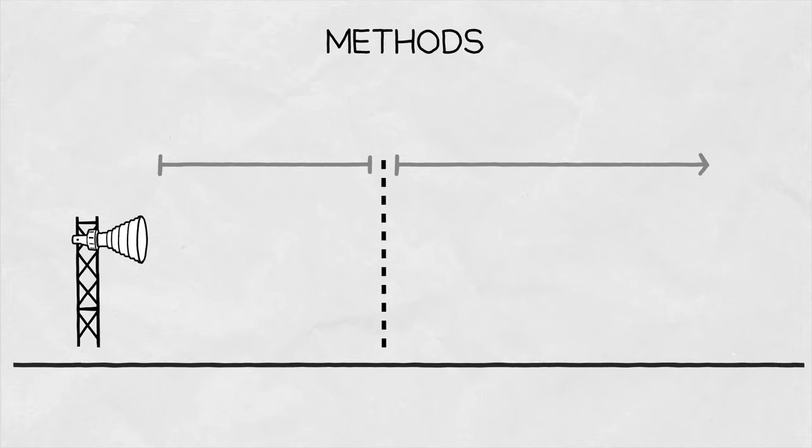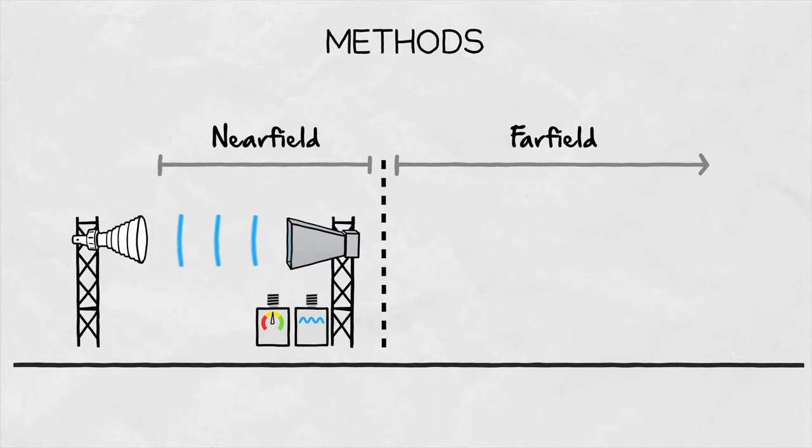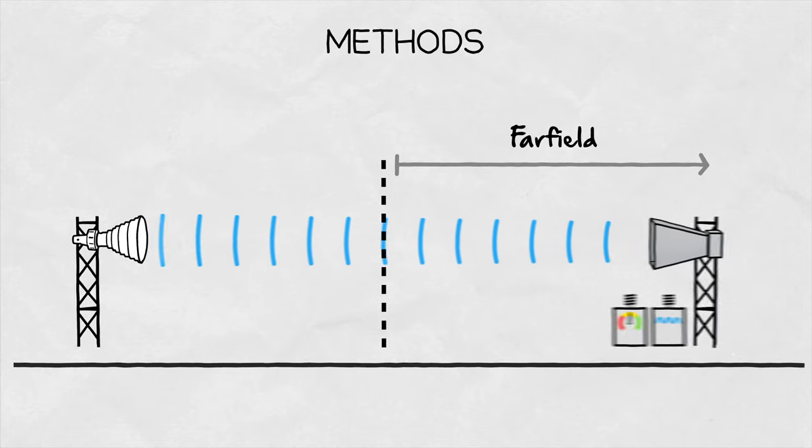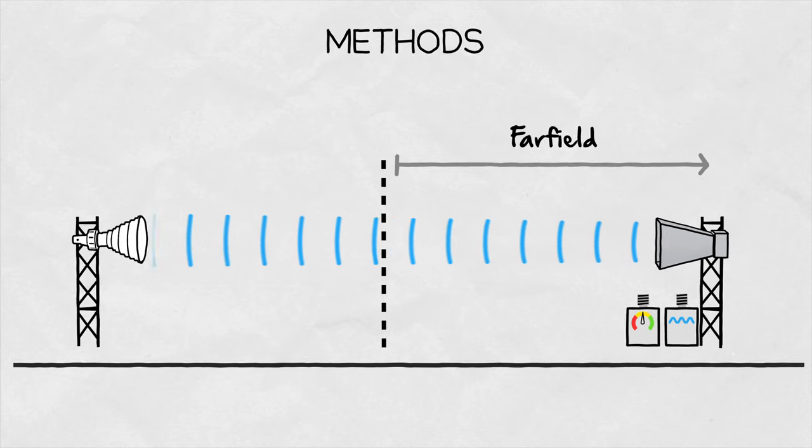There are two methods for radiation pattern measurement: far field and near field. The near field method requires complicated mathematics while usually being less precise. Therefore, we'll skip it for now and concentrate on the easier to understand far field measurement technique.